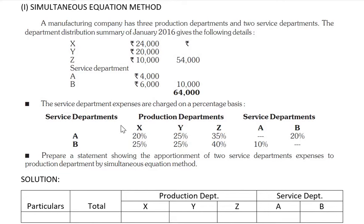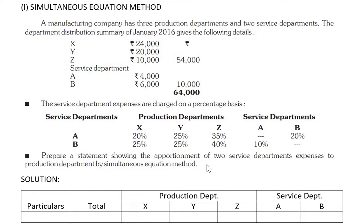The inter-department sharing of expenses are as follows: service department A will distribute its expenses as 20% to X, 25% to Y, 35% to Z, and 20% to B. Service department B will distribute its expenses as 25% to X, 25% to Y, 40% to Z in the production department, and 10% to A in the service department. We have to prepare the statement showing the apportionment of the two service departments A and B to the production department by the simultaneous equation method.